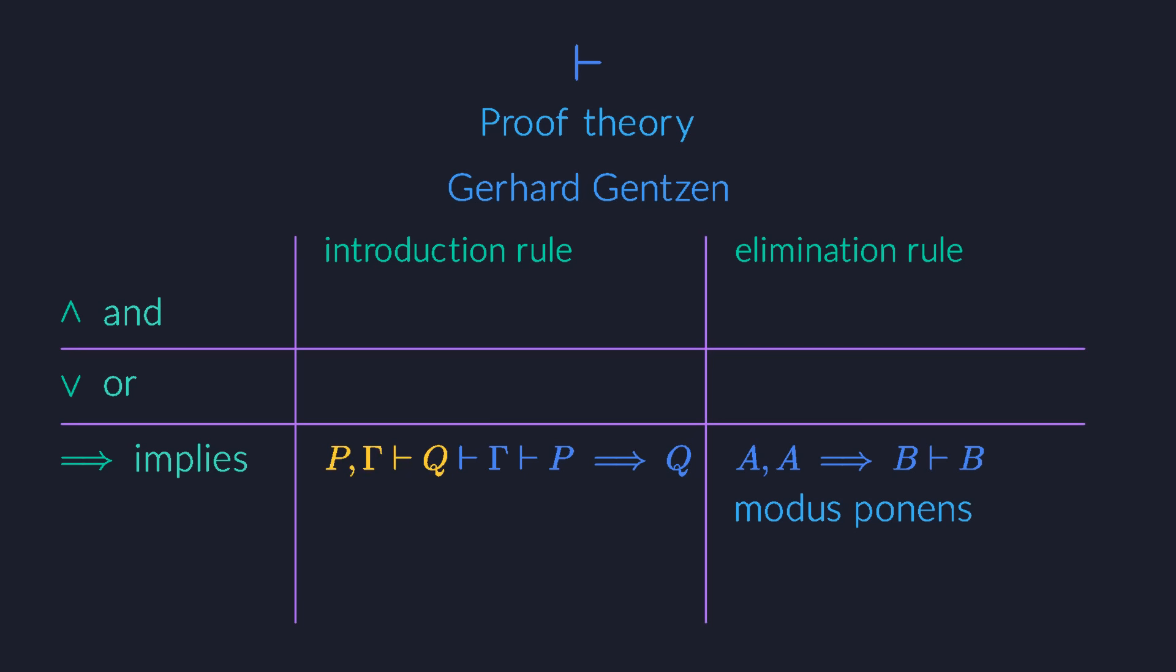Say that we have been able to prove Q from a potentially large set of other sentences. Take one of those sentences, P, and move it to the other side. From the remaining sentences, we can now prove that from P follows Q. So we have effectively introduced an arrow into the sentence on the right.